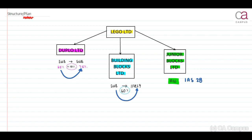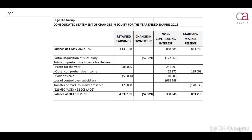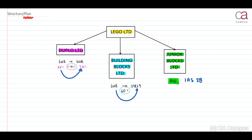The requirement states that we need to prepare the statement of changes in equity. This can be difficult, but you need to ensure that you understand what you need and how to attempt the question. In our structure, I know that I have my four entities. I prefer to make use of an analysis of owner's equity, so I briefly plan. You don't always have to write this down — you need to think about this.